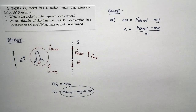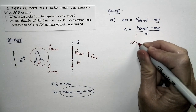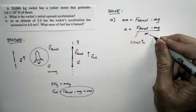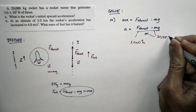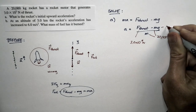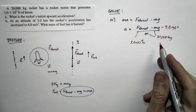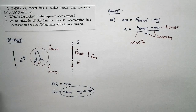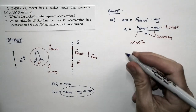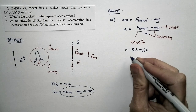We know all these numbers. The problem states the thrust force is 3.0 times 10 to the fifth newtons, the mass of the rocket is 20,000 kilograms, and G is 9.8 meters per second squared since the rocket is near the surface of the Earth. Plugging in all the numbers and solving for the acceleration, we get 5.2 meters per second squared — two significant figures.